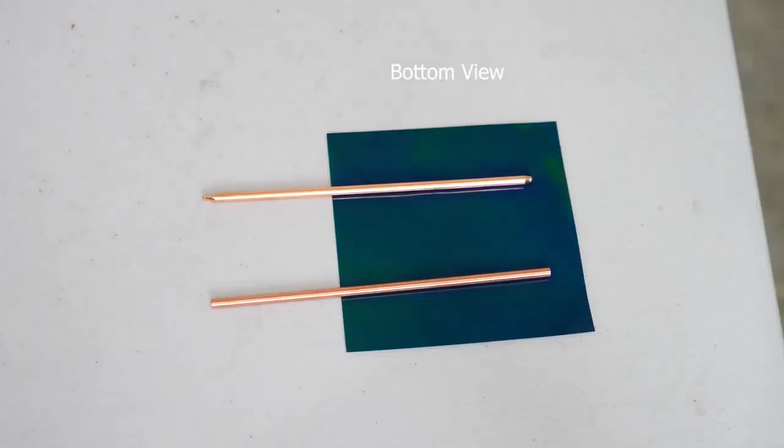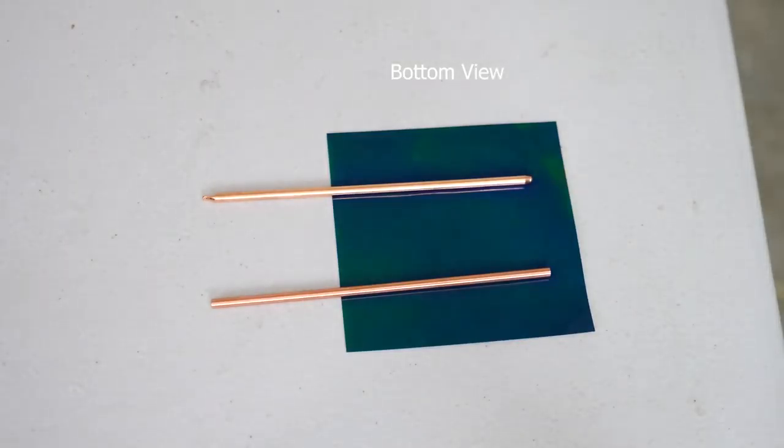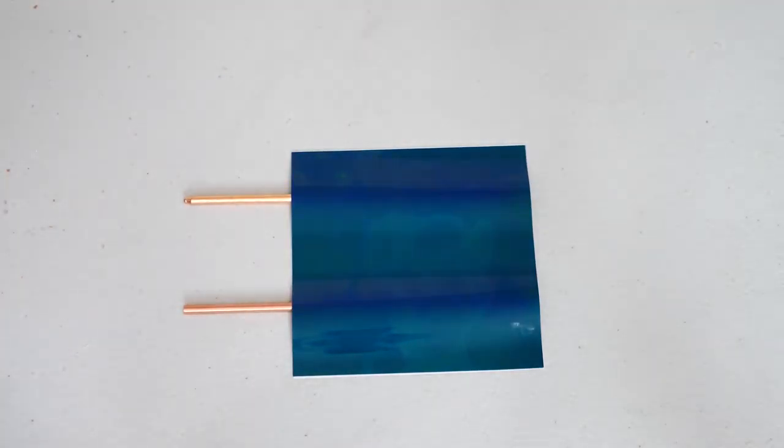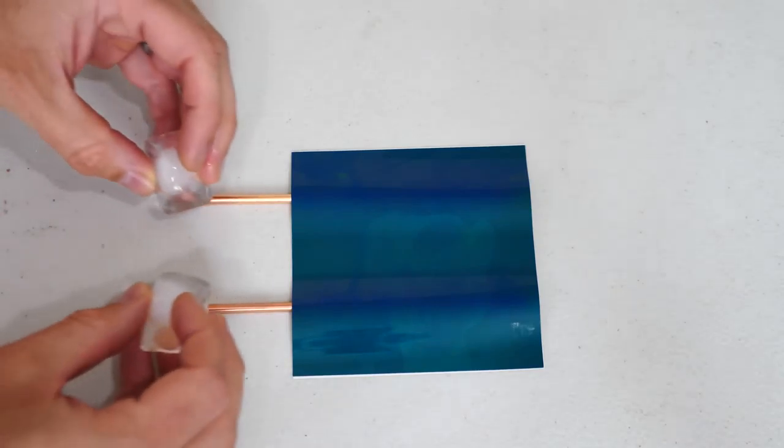Okay so what I'm going to do is I'm going to set the ice on the heat pipe and the copper pipe and we're going to see how fast the heat gets transferred from the pipe to the ice. Okay three, two, one.